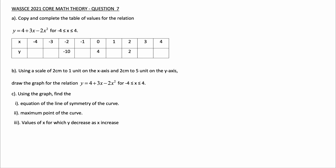Question 7a: Copy and complete the table of values for the relation y is equal to 4 plus 3x minus 2x squared, for x between negative 4 and 4.